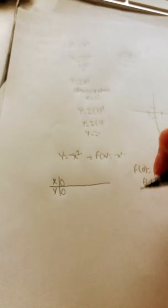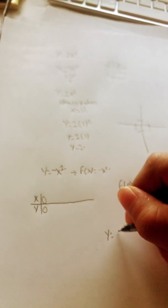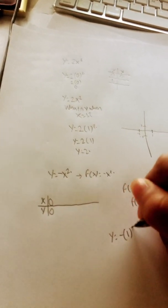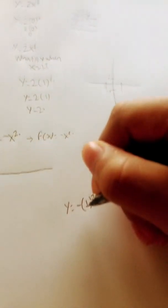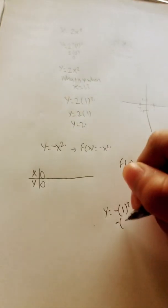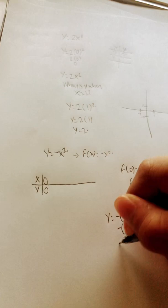What about when x equals 1? If I do y equals negative the quantity 1 squared, this would be negative, and then 1 squared is just 1, so it'd be negative 1.